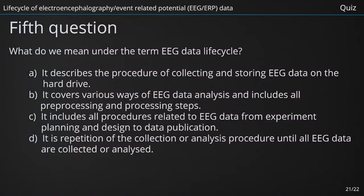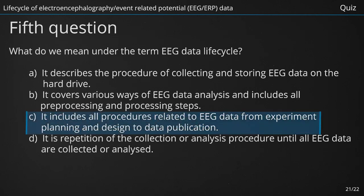What do we mean under the term EEG data life cycle? A. It describes the procedure of collecting and storing EEG data on the hard drive. B. It covers various ways of EEG data analysis and includes all preprocessing and processing steps. C. It includes all procedures related to EEG data from experiment planning and design to data publication. D. It is a repetition of the collection or analysis procedure until all EEG data are collected or analyzed. The right answer is C — It includes all procedures related to EEG data from experiment planning and design to data publication.